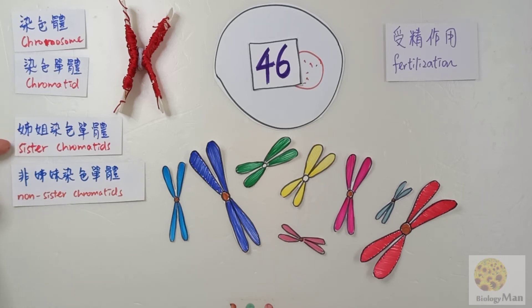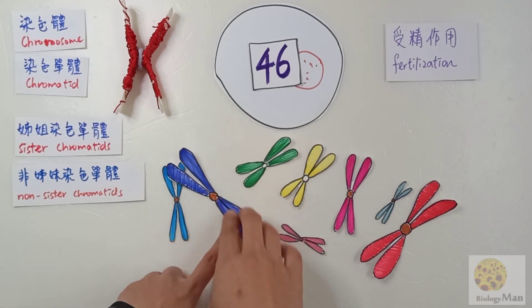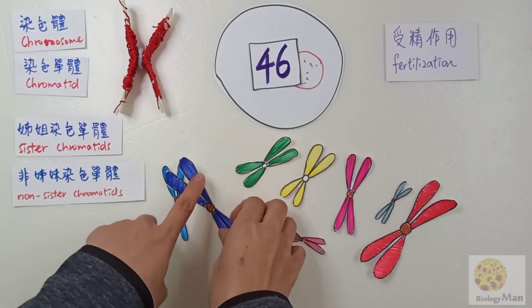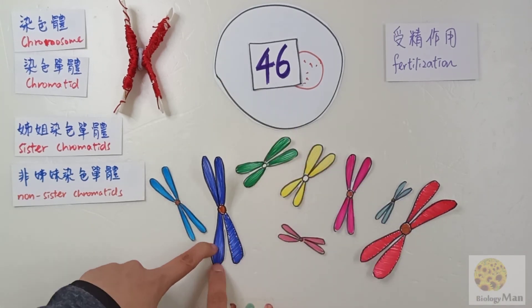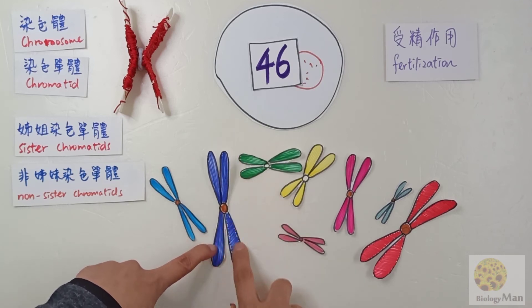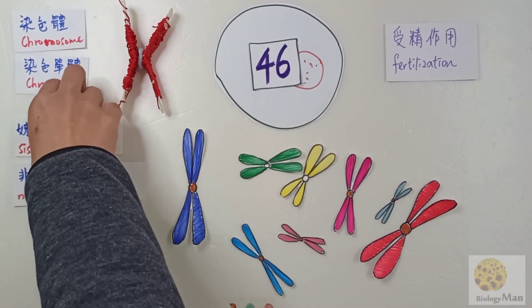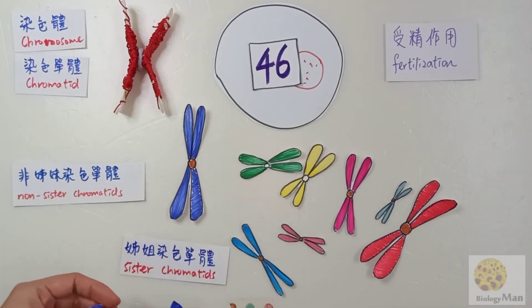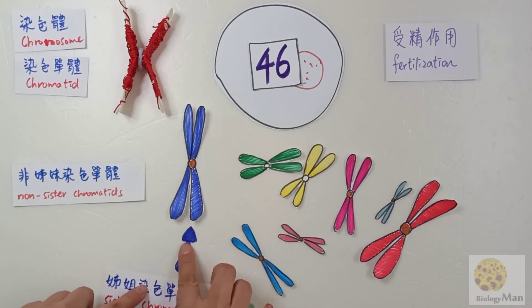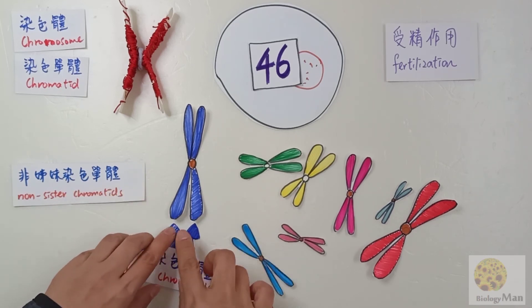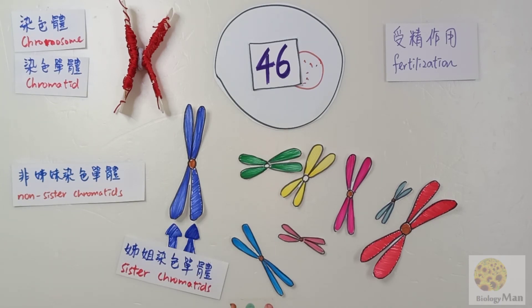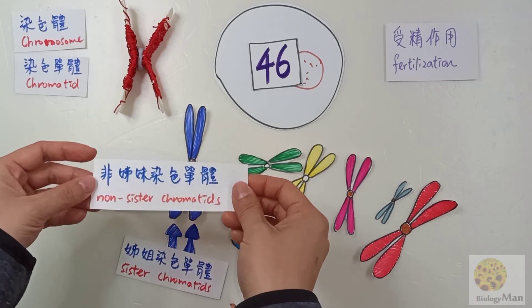Let's go back to the concept of sister chromatids and non-sister chromatids. When we talk about sisters, they have a closer relationship to each other. Sister chromatids are the two chromatids in the same chromosome. These two chromatids are so close to each other and, most importantly, they contain identical genetic information — an identical nucleotide sequence. So we call these two chromatids sister chromatids.